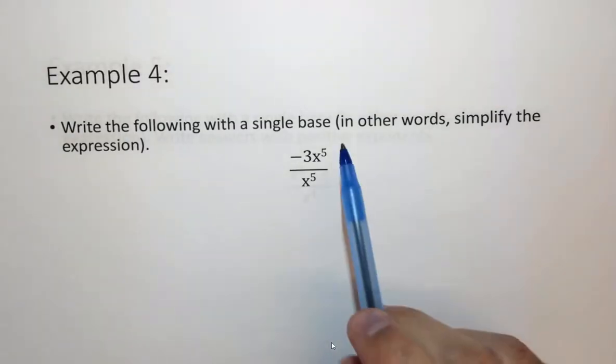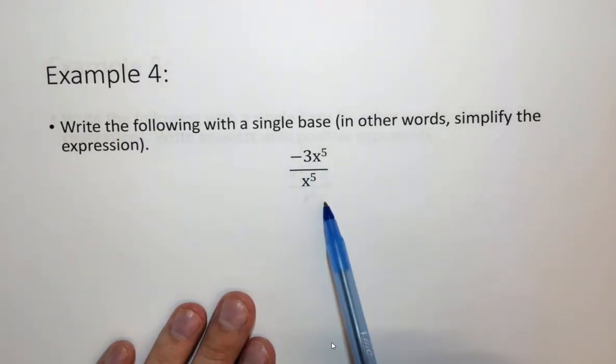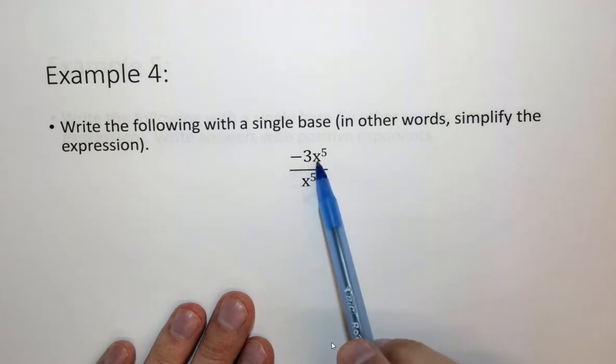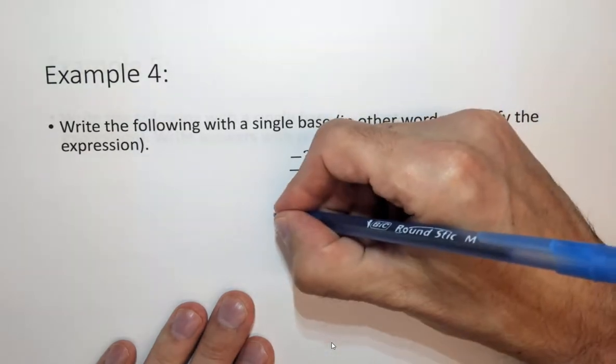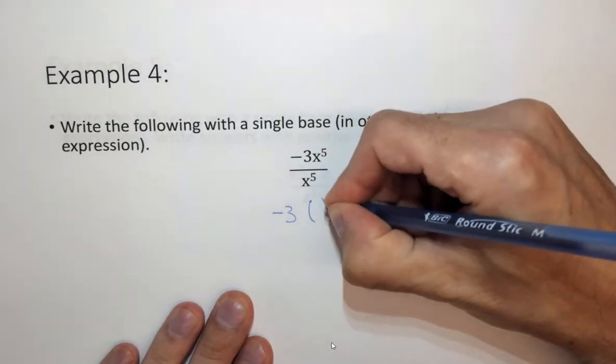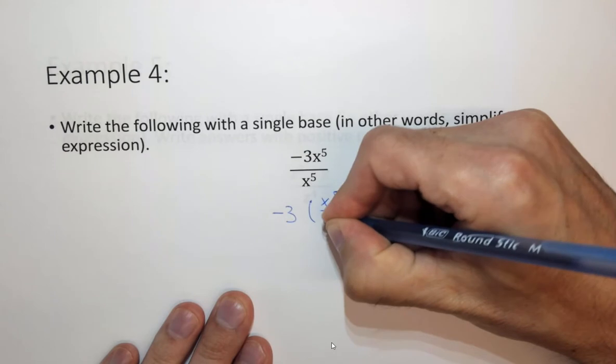In the next example we have a little bit more going on here. So in order to simplify this expression we want to get rid of this minus 3. So what I would do is do it as minus 3 times x to the fifth over x to the fifth.